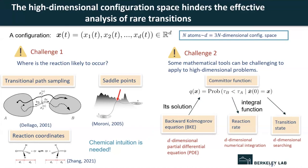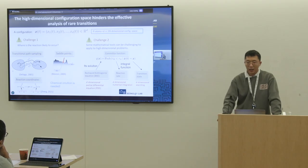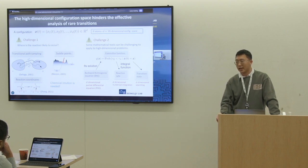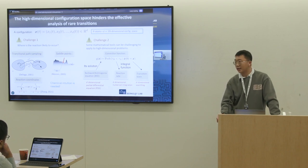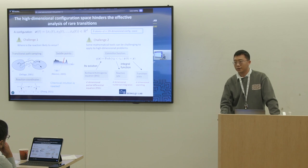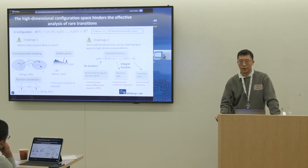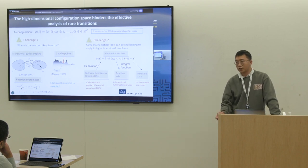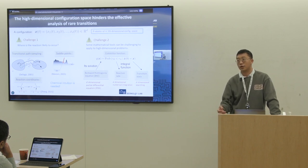The key challenge lies in the high dimensionality of the configuration space. For a molecule with N atoms, the dimension is 3 times N in Cartesian coordinates. Researchers face two main difficulties. The first is identifying where the reaction is likely to occur — methods like transition path sampling, saddle point searching, and dimension reduction can help, but require a lot of chemical intuition. The second challenge is that even with useful mathematical tools, the high dimensionality causes significant computational burdens.